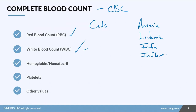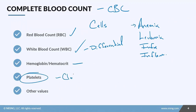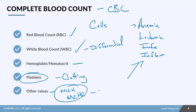The CBC typically includes your red blood cell count, your white blood cell count — often reported as a differential that breaks down all the white blood cell subcategories — and your H&H (hemoglobin and hematocrit), which relates back to anemia. It also looks at platelets, which are responsible for clotting. Additional values include MCH (Mean Corpuscular Hemoglobin) and MCHC (Mean Corpuscular Hemoglobin Concentration), which check the size of cells.